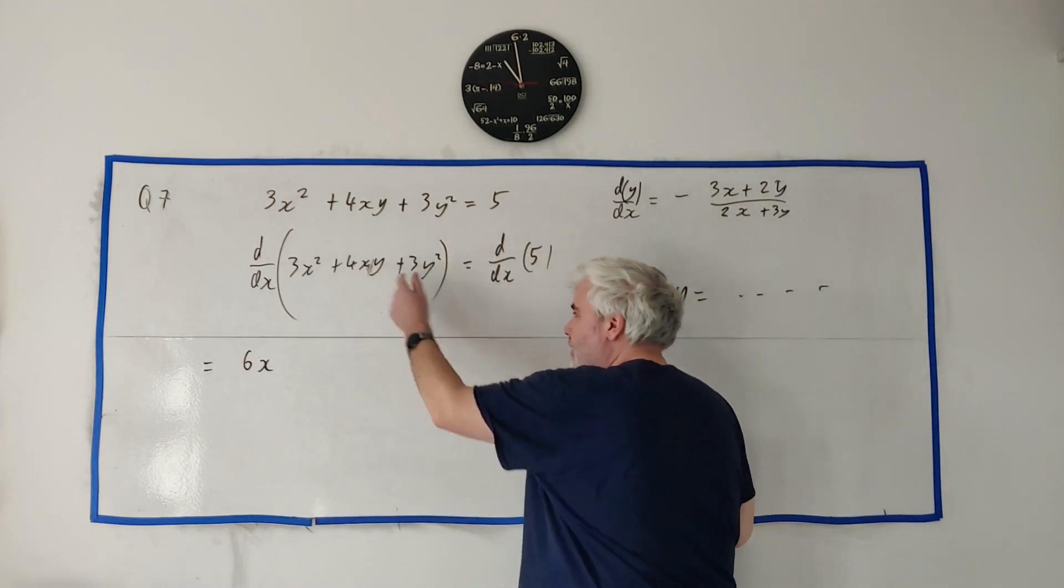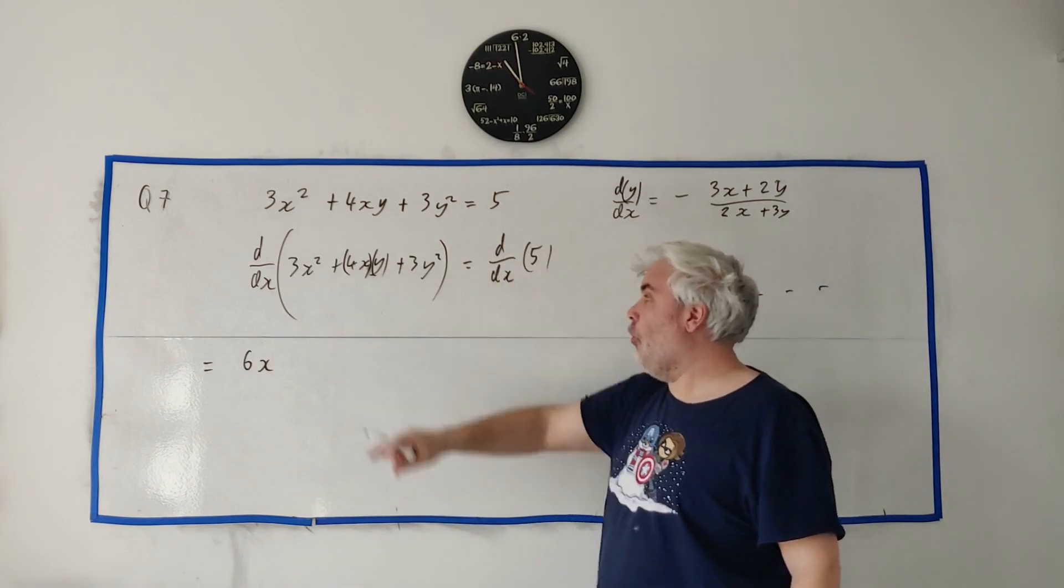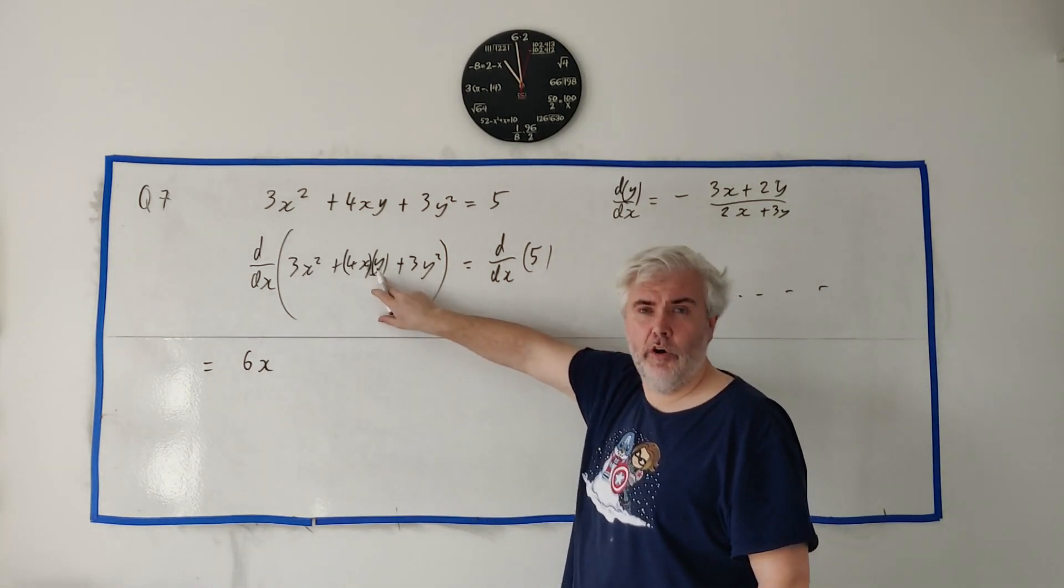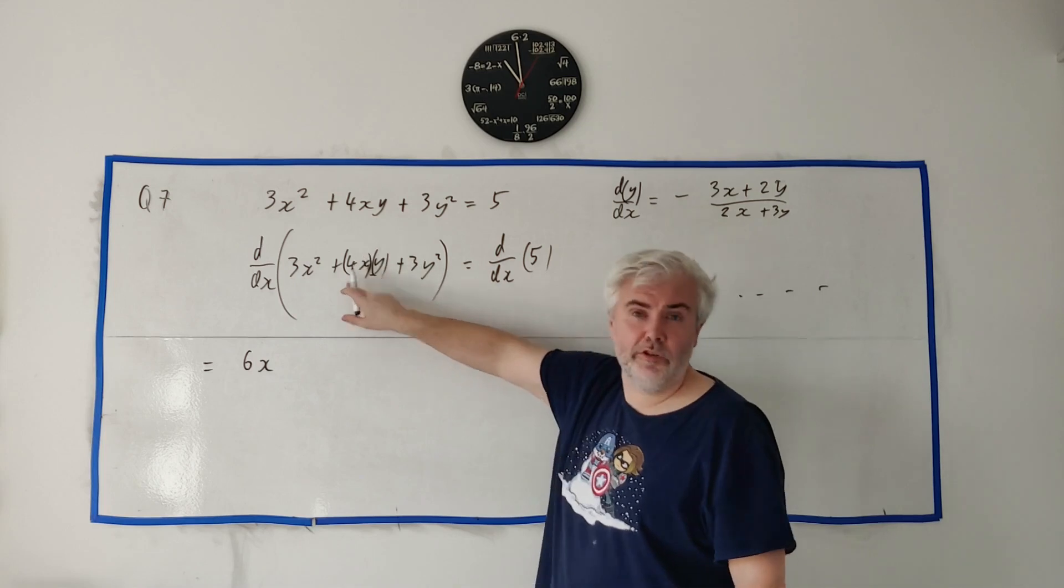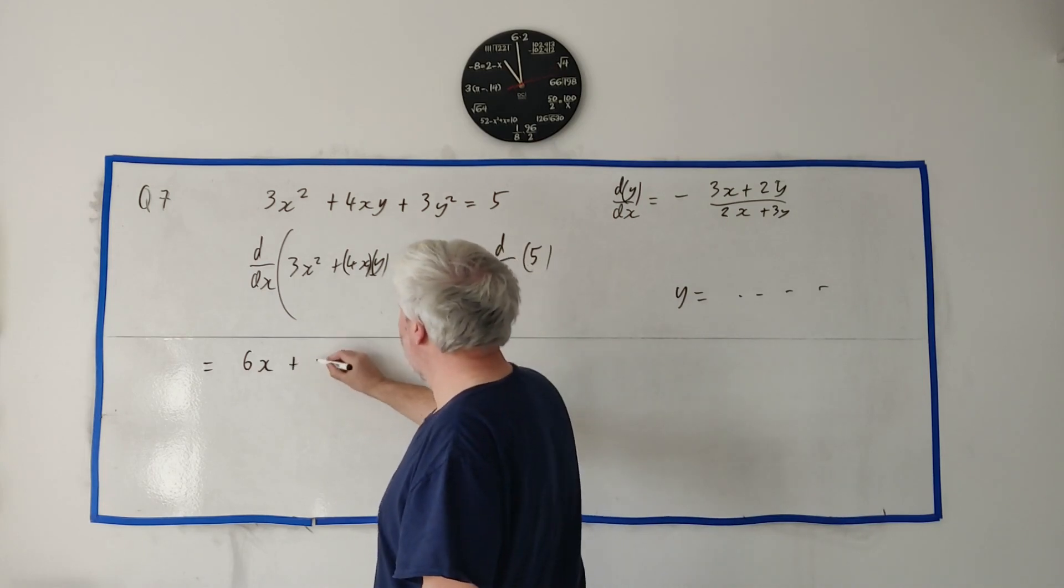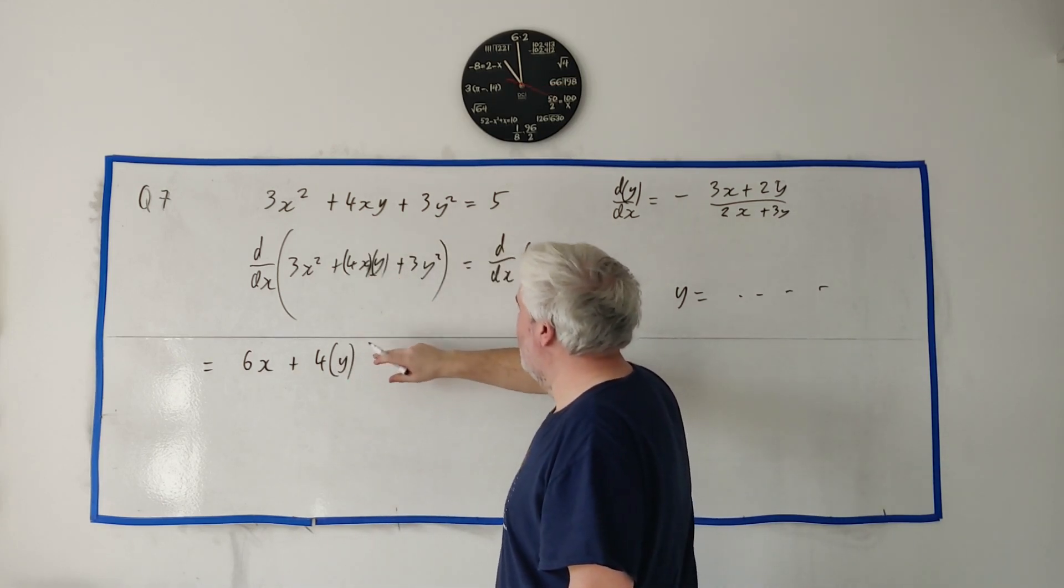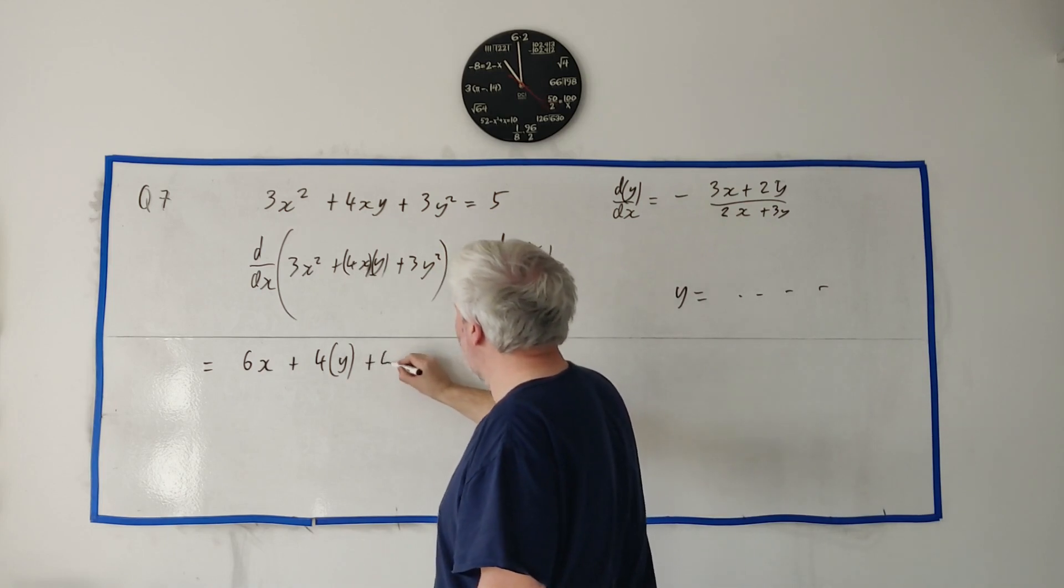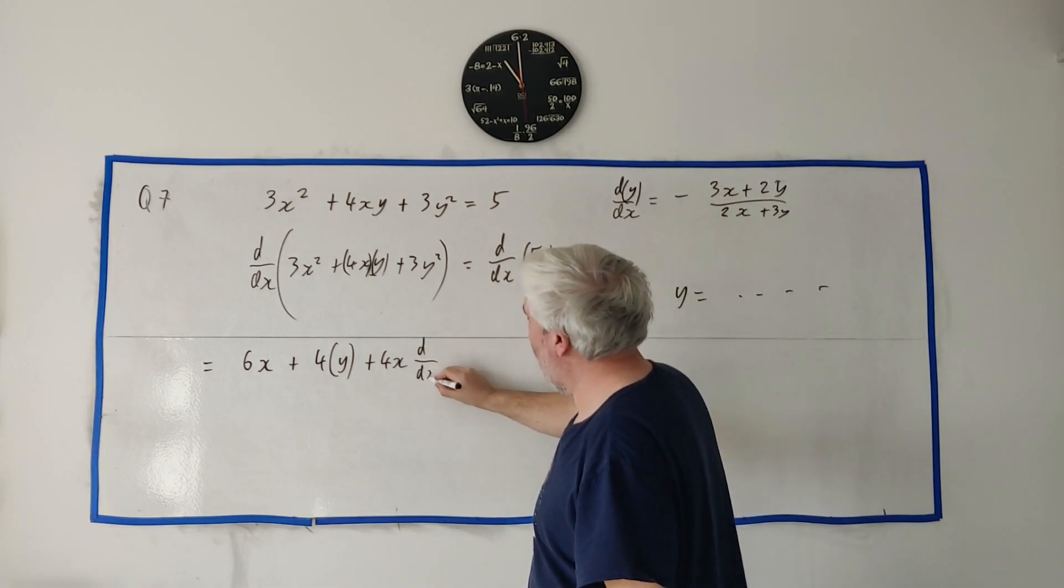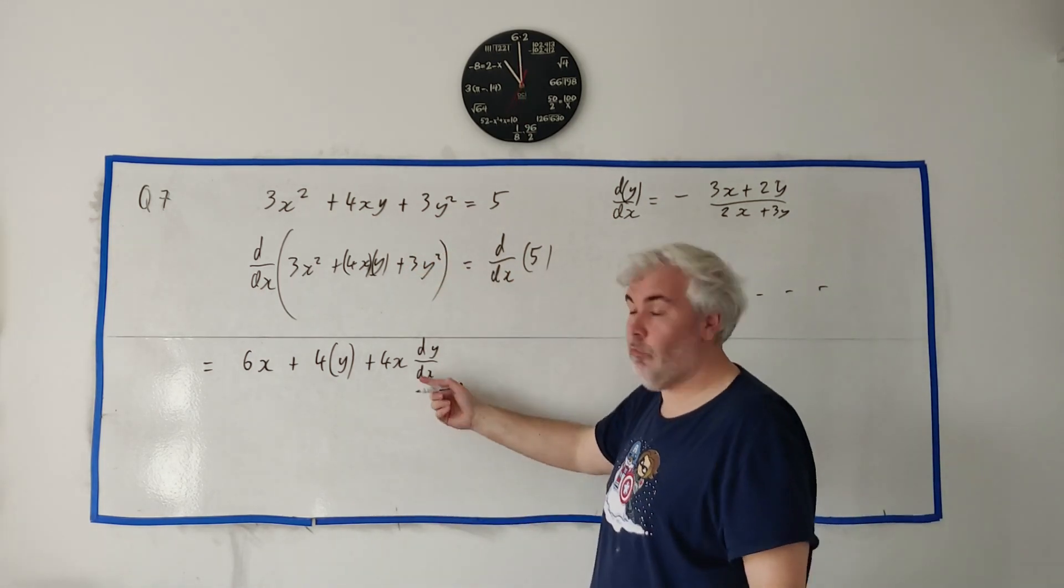Now we have to differentiate this guy. A little trickier, but really it's just the product rule. It's just two things being multiplied: 4x and y. So we look up the product rule. It says to differentiate one of them and leave the other alone, and differentiate the other one and leave the first one alone. So let's differentiate the first one, we get 4, and leave the other one alone, we get y. Then plus, the product rule is a plus. Then we leave the first one alone, 4x, and we differentiate the second one.